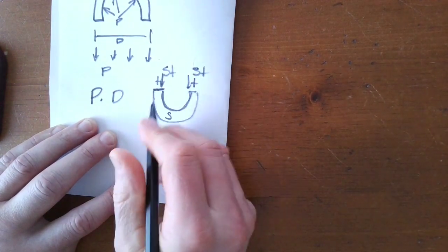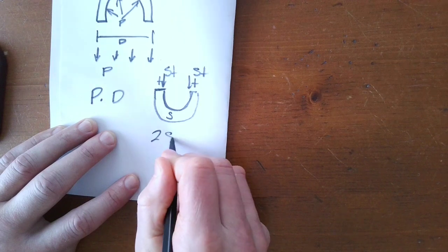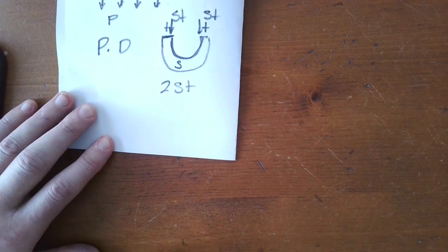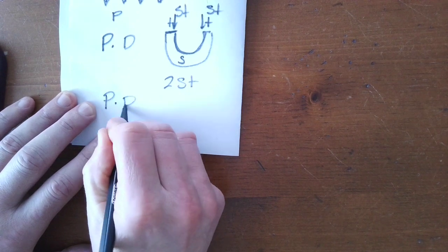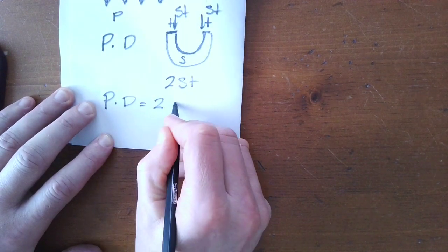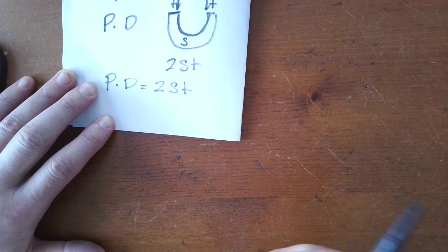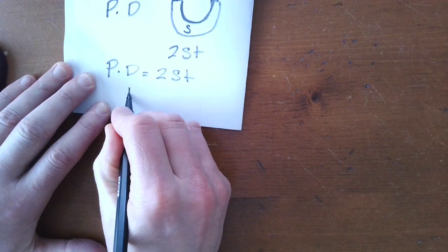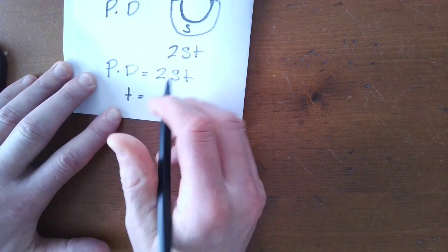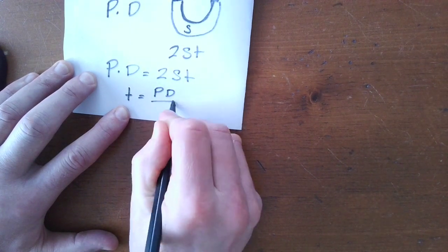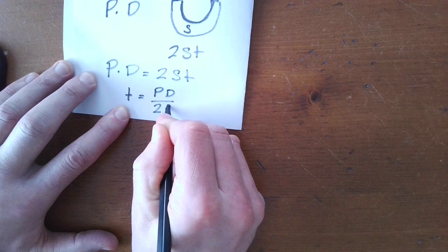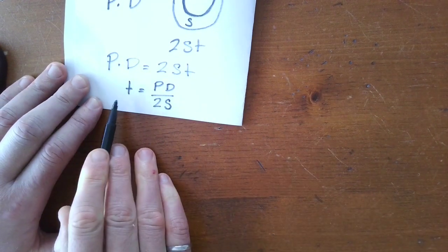So, we've got two of those. So, we've got 2ST. So, the equation of equilibrium is PD equals 2ST. Or, to rearrange, T equals PD over 2S.